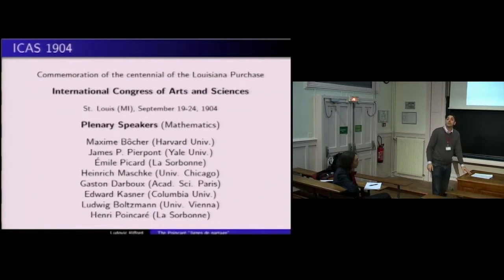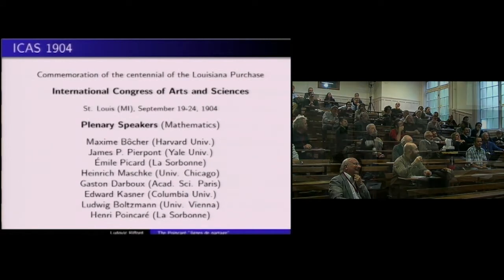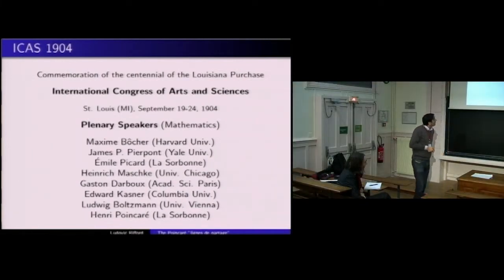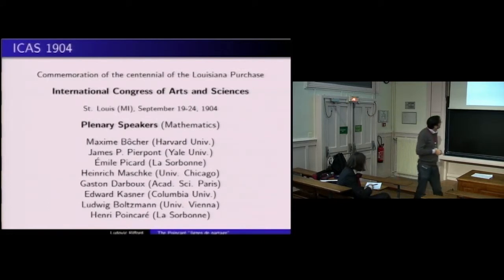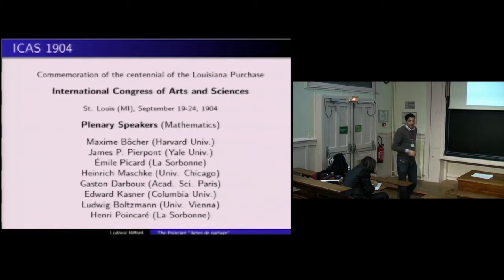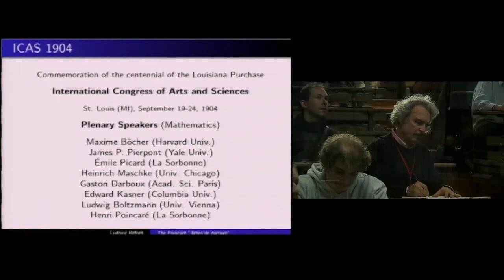Dans la section mathématiques, voilà le plateau qui représente la fine fleur des mathématiciens de l'époque. La star, c'était Poincaré. Il y avait trois Français : Picard, Darboux, Poincaré — peut-être dû au fait qu'on commémorait le centenaire de l'achat de la Louisiane à la France. On note aussi Boltzmann. Il n'y a pas d'Allemand. Parmi tous ces gens, un seul avait fait sa thèse aux États-Unis ; à cette époque, les Américains venaient à Göttingen pour faire leurs thèses.